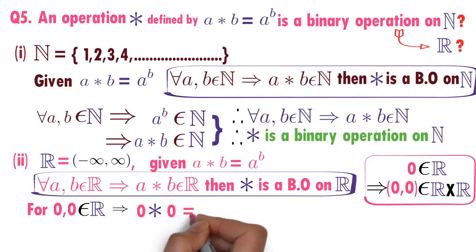Now I will calculate 0 star 0. How 0 star 0 is defined? How A star B is defined? A power B. What is 0 star 0? That is 0 power 0. What is the value of 0 power 0? 0 power 0 is not defined. Is it a real number? No. 0 power 0 is not a real number.